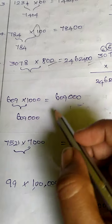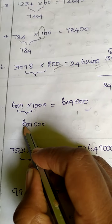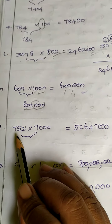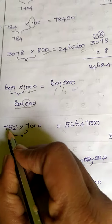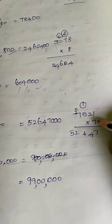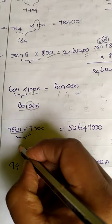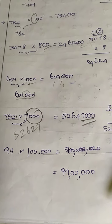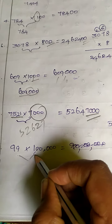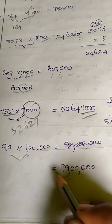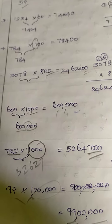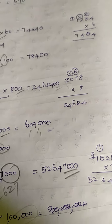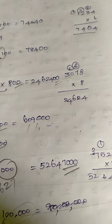Next: 3078 multiplied by 800. Multiply 3078 by 8 to get 24,624, then add two zeros at the end. Similarly, 609 multiplied by 1000: multiply by 1 giving 609, then add three zeros, so the answer is 6,09,000. For 7521 multiplied by 7000: multiply 7521 by 7 to get 52,627, then add three zeros at the rightmost part. And 99 multiplied by 1 lakh: multiply by 1 giving 99, then add five zeros. This is an easy problem — work it out, my dear children. After watching the video, send the message that you have seen the video, do the homework, and send images to my personal number. Thank you, students.